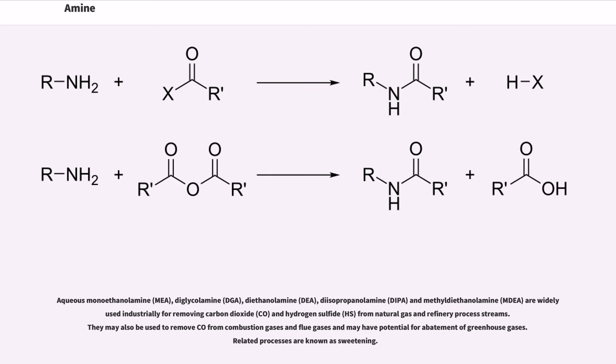Aqueous monoethanolamine, MEA, diglycolamine, DGA, diethanolamine, DEA, diisopropanolamine, DIPA, and methyl diethanolamine, MDEA, are widely used industrially for removing carbon dioxide, CO2, and hydrogen sulfide, H2S, from natural gas and refinery process streams. They may also be used to remove CO2 from combustion gases and flue gases and may have potential for abatement of greenhouse gases. Related processes are known as sweetening.